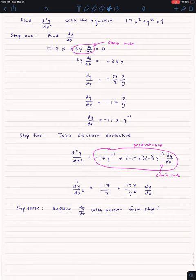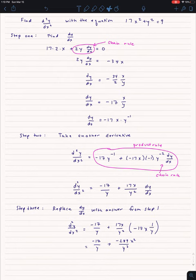Once I do that, I'm left over with another dy/dx. So that's when I'm going to do step 3. And that is to take the answer that I got from step 1, that is that dy/dx equals negative 17x times y to the negative 1 power, and I'm going to plug that in.